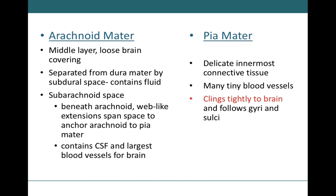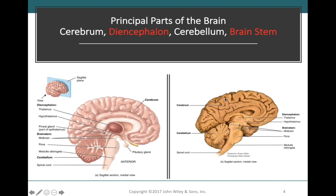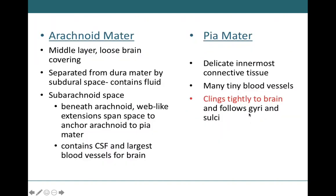Cerebrospinal fluid is the third structure protecting the brain. Large blood vessels are also found in the subarachnoid space. The pia mater is the innermost layer, attaching directly to the brain tissue and following its irregular shape. The brain has infoldings called sulci and outward projections called gyri — often referred to as valleys and hills respectively. The pia mater clings so tightly to the brain that it follows both the gyri and sulci.